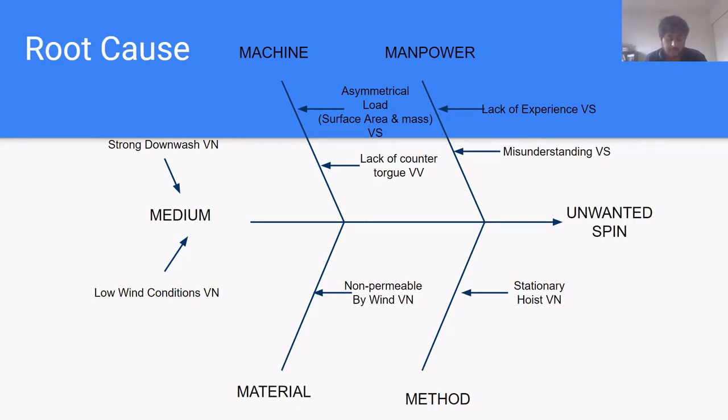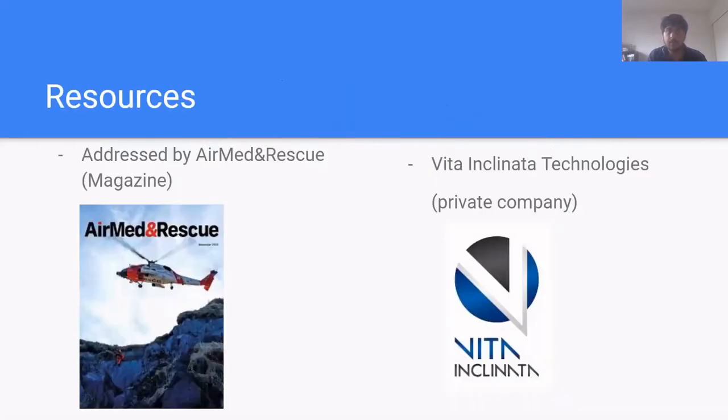This solution should be able to provide a counter torque to stop unwanted spin and should be able to deal with asymmetrical loads with high surface area. The problem of load spin is addressed in the Air and Med Rescue magazine which tells helicopter operators what they can do to reduce load spin as well as private company Vita Incognita Technologies that provides technical solutions to this issue.